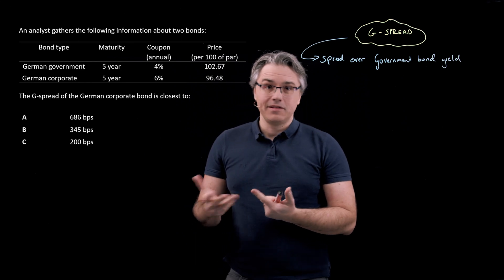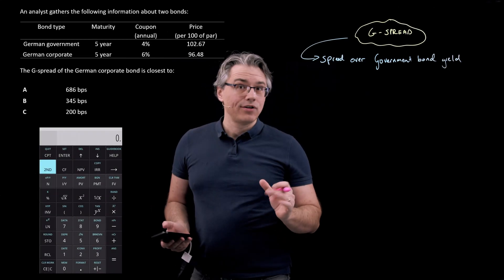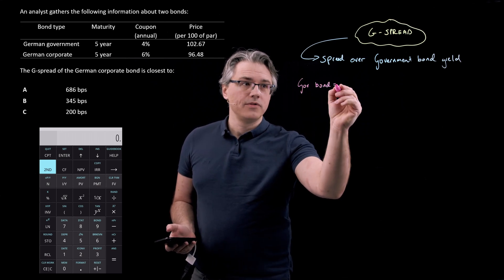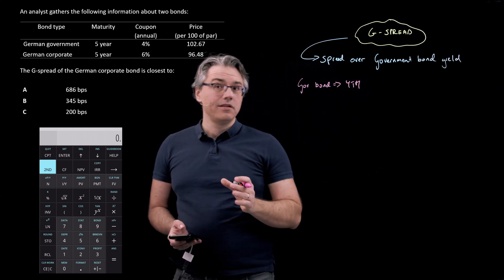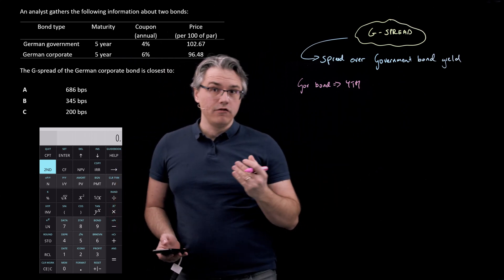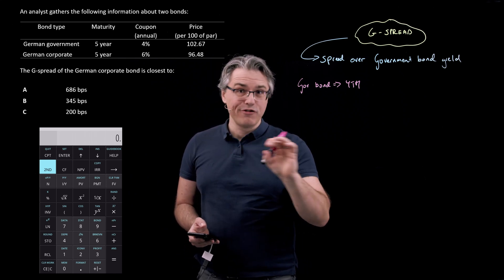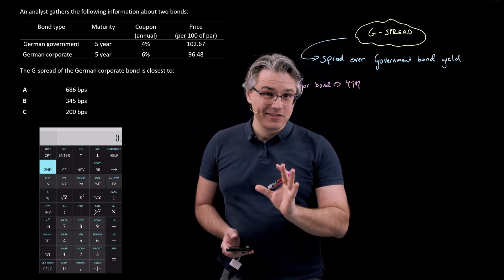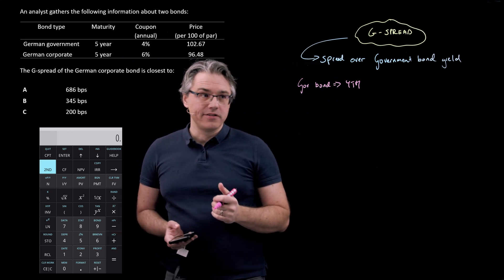Okay, so we need to set this up on the calculator. Let's get cracking. So let's start with the government bond first. And obviously I'm looking for its yield to maturity. So I'm going to utilize the time value of money worksheet on the calculator, which is that third row from the top with its distinctive, typically slightly different coloring than the other keys. And I'll just input the relevant parameters.